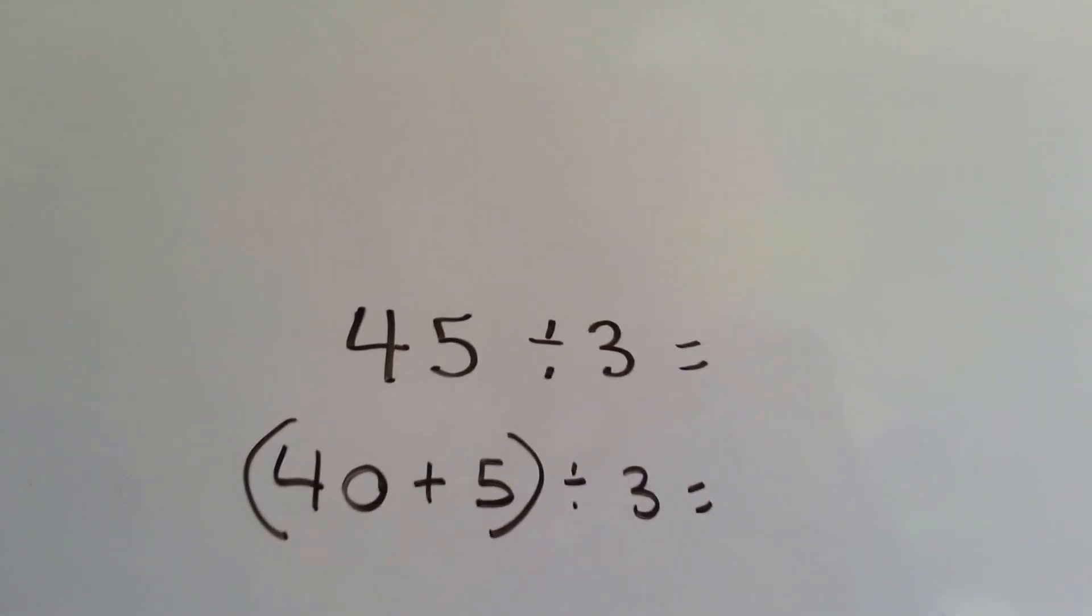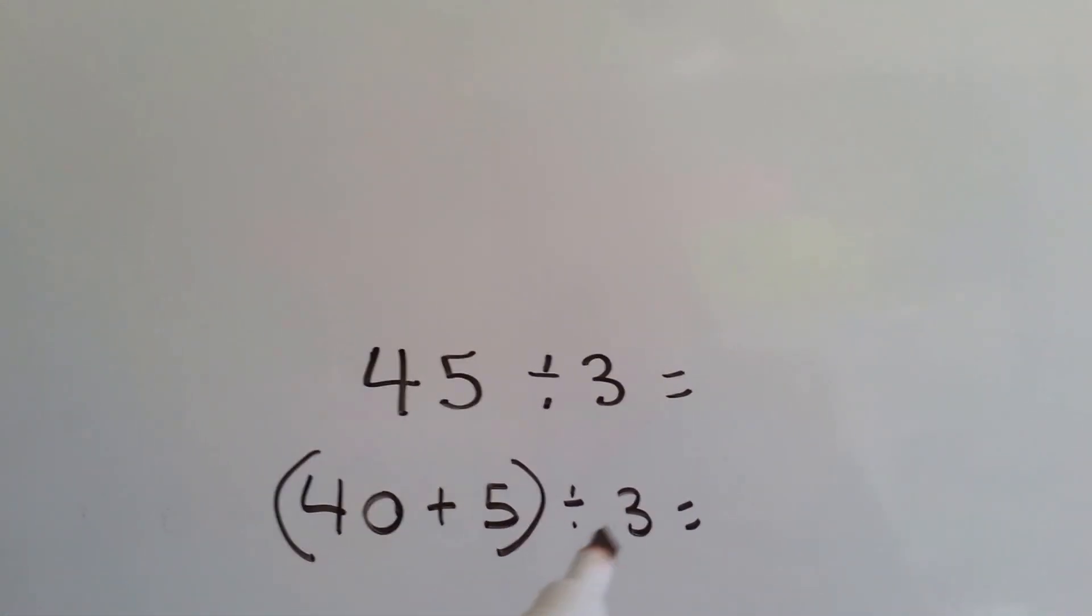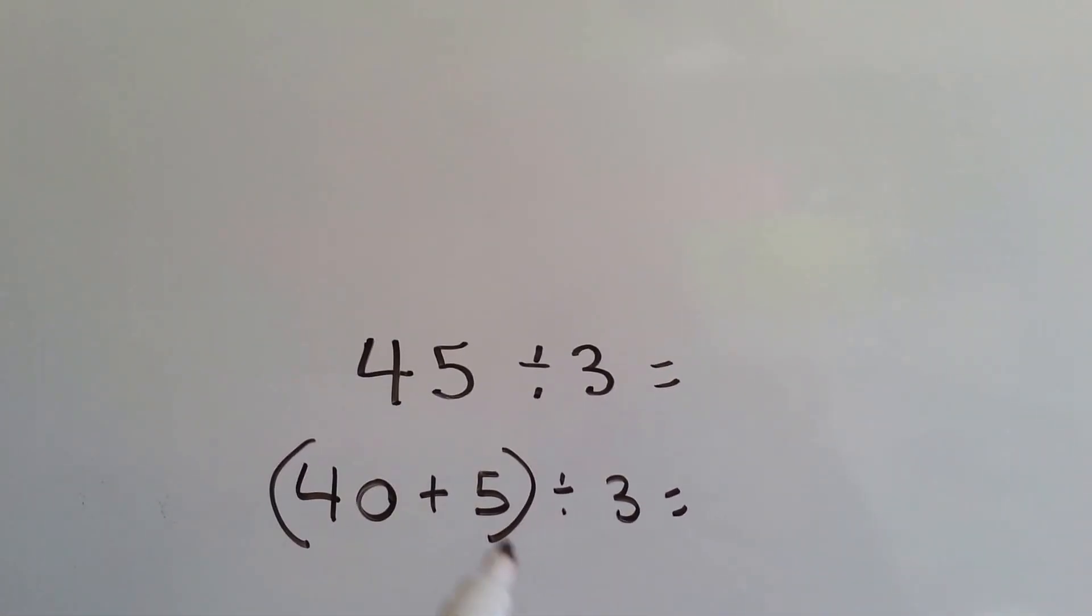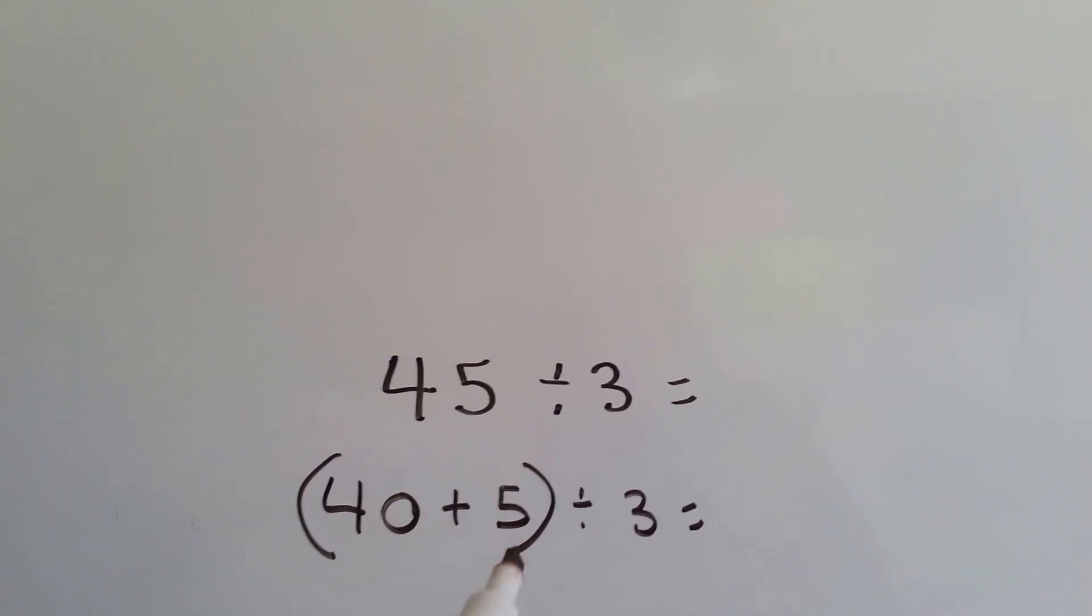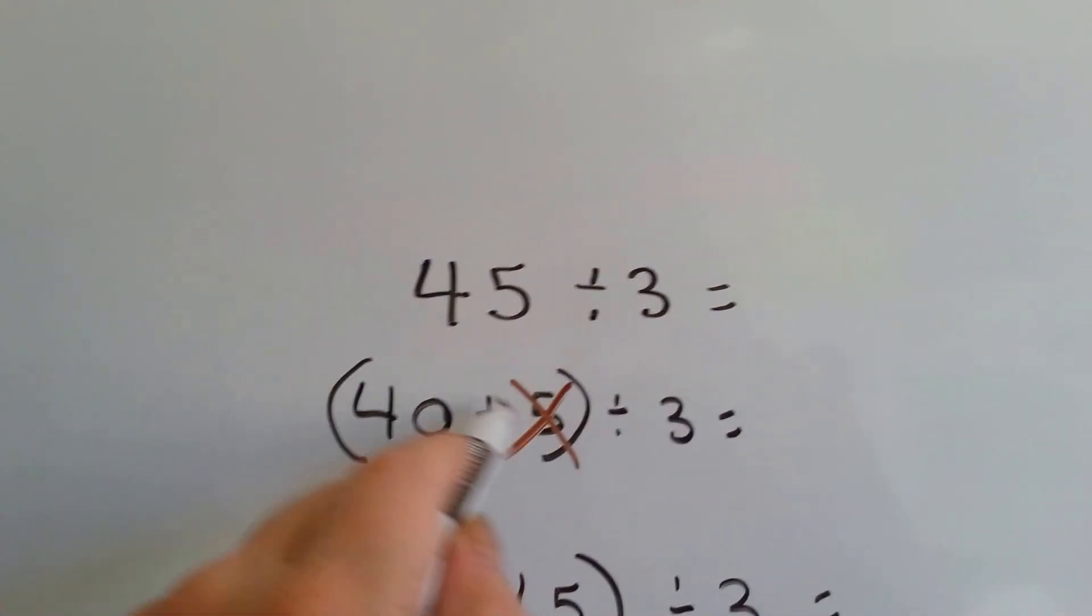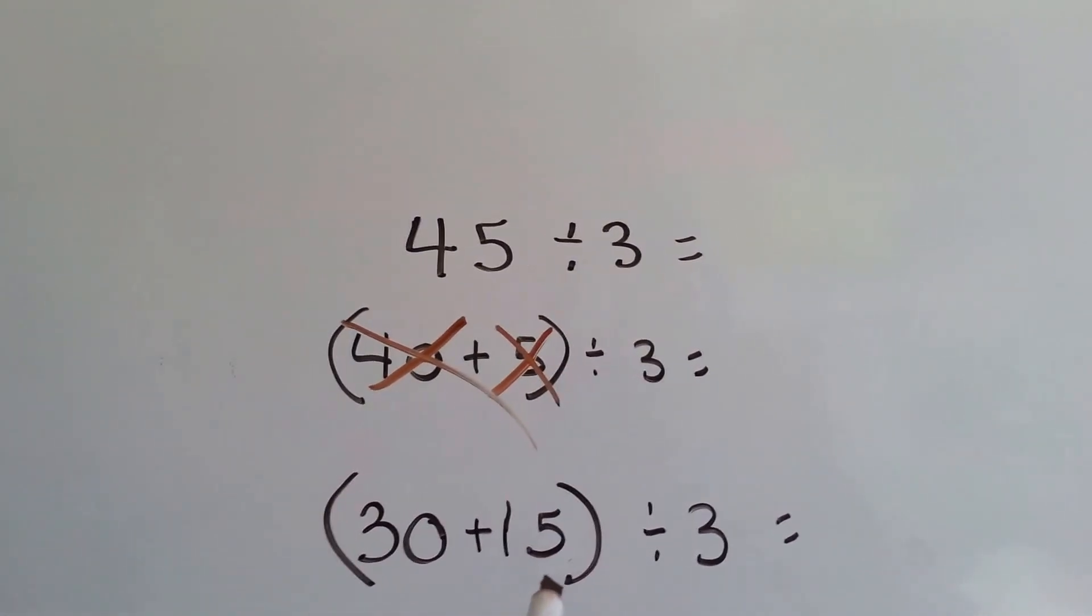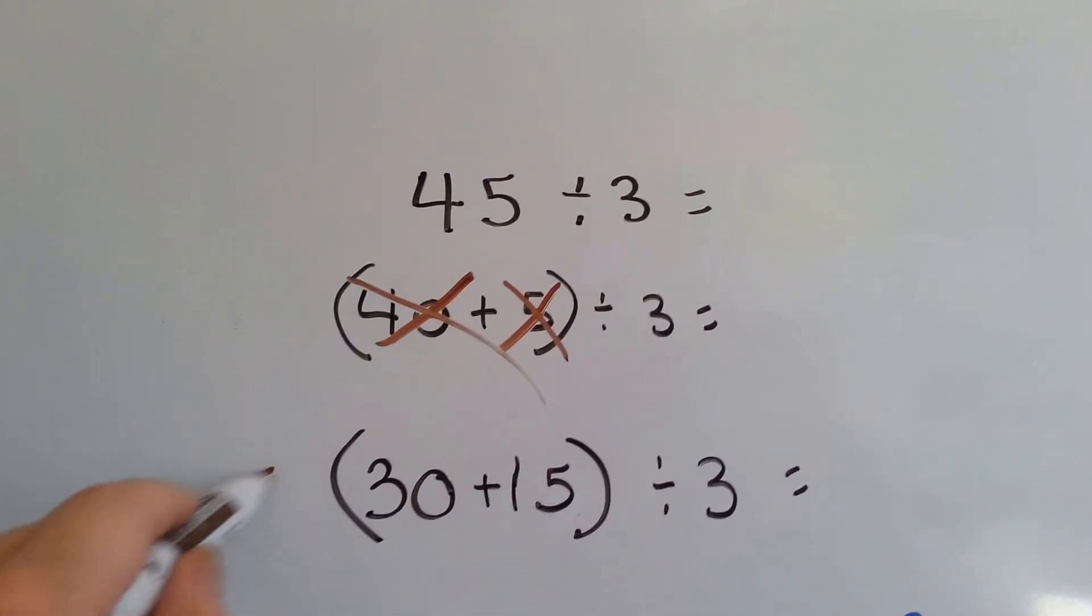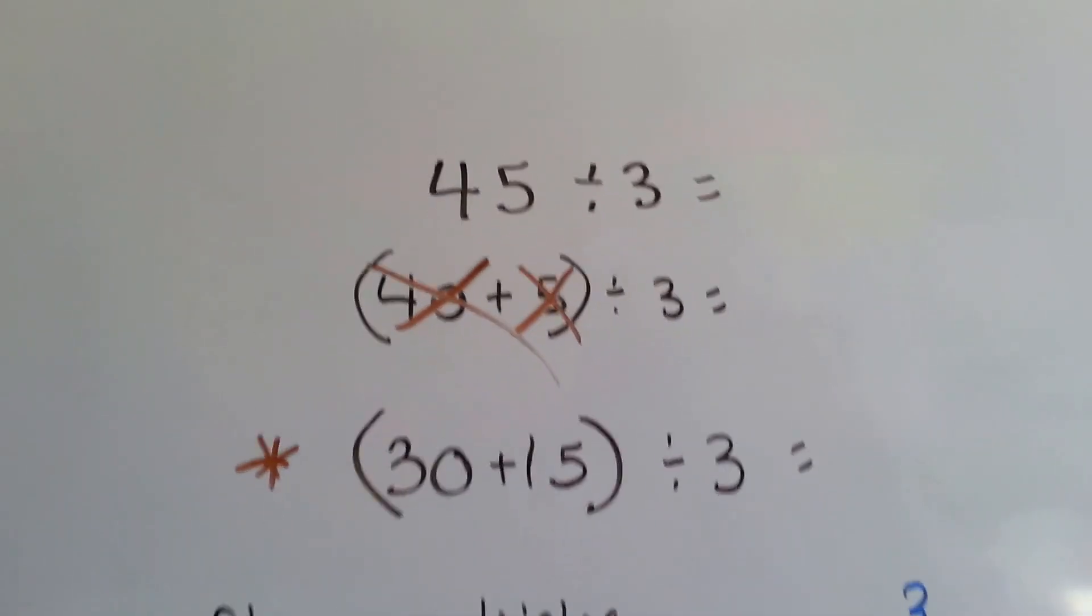Let's try another one. 45 divided by 3. Should we split it into 40 plus 5 divided by 3? Is 5 a multiple of 3? 3 times 1 is 3, 3 times 2 is 6. So this doesn't work at all, because 5 isn't even a multiple, is it? What if we split it into 30 and 15? Yes, this one is better because these are both multiples of 3.